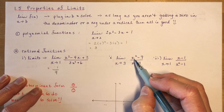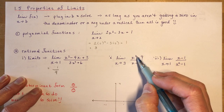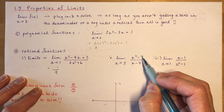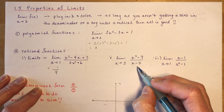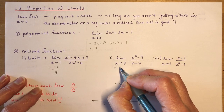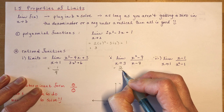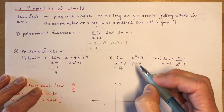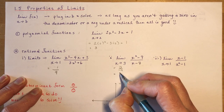This one has x approaching 3. I put in 3 and get 9 minus 9 is 0 divided by minus 4. Don't be upset if you have a 0 in the numerator — that's okay. The limit is just 0.